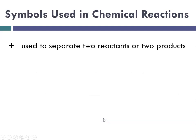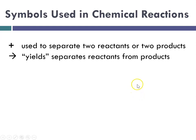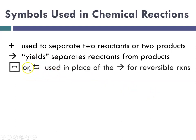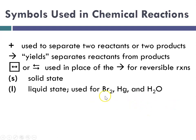So what are some other symbols that we use? Well, we use a plus sign to separate the two reactants or the two products. The arrow, as I've previously stated, yields, separates reactants from products. So we can read it as yields or react to produce. Sometimes later on this year we'll see either a double-sided arrow or an arrow pointing one way and the other way, and those are to indicate reversible reactions. S, as I said, is solid. L is liquid, which would be chiefly used for bromine, mercury, and water.